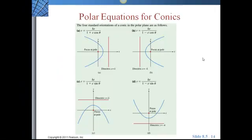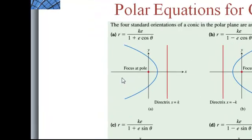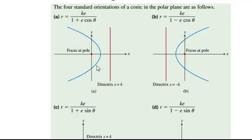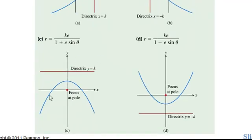So we have four standard orientations of a conic in the polar plane. All of them have the KE on the top, and the only thing that changes is the cosine or sine. So the cosine is going along the x-axis and the sine is going to be going up and down along the y-axis.